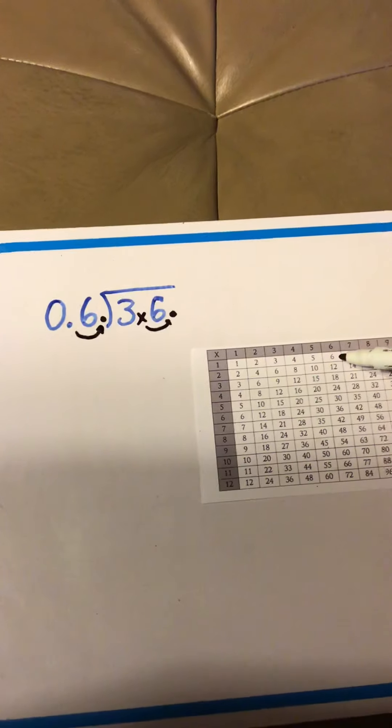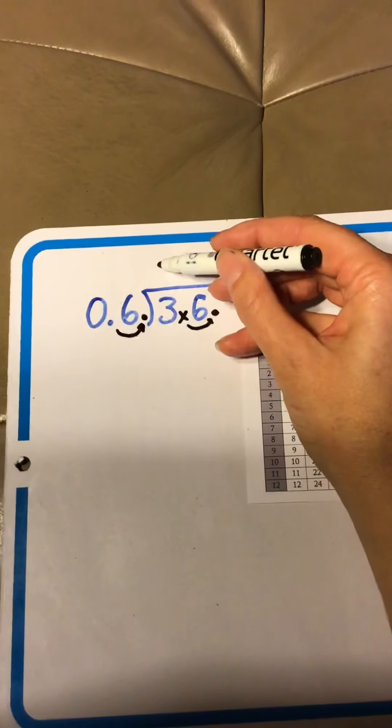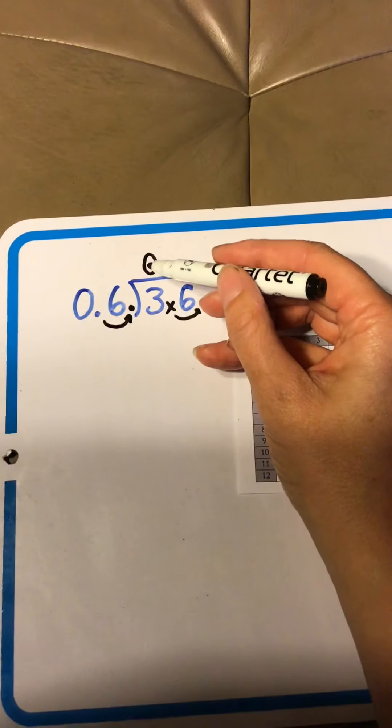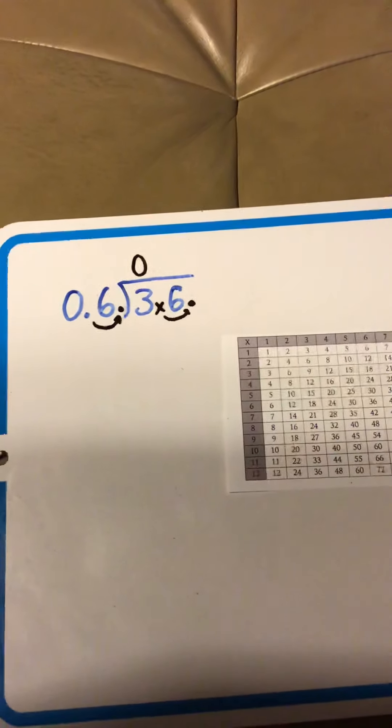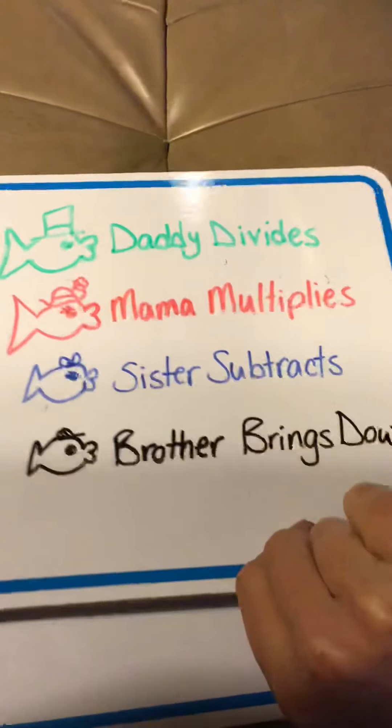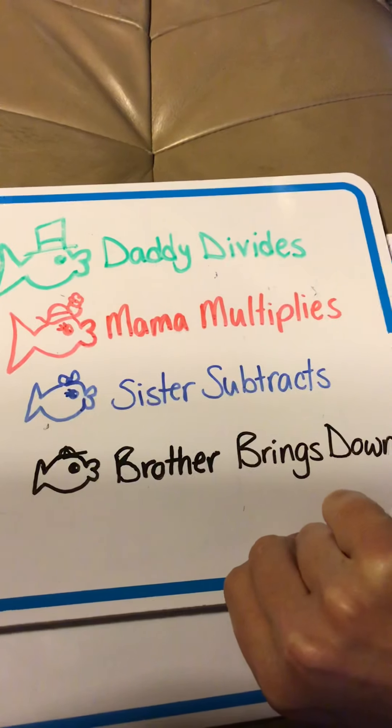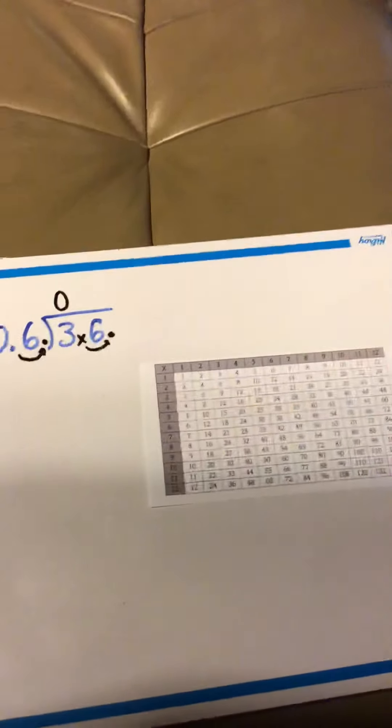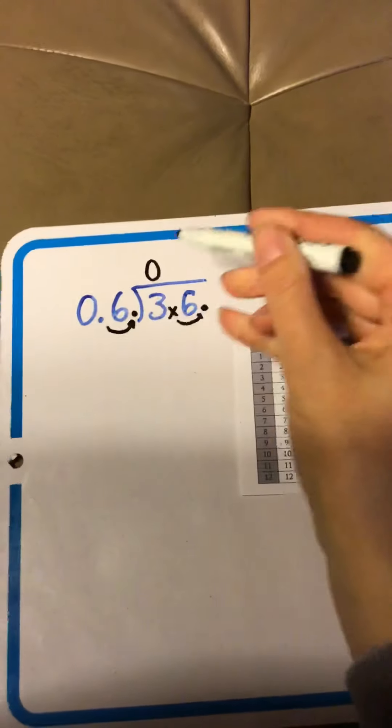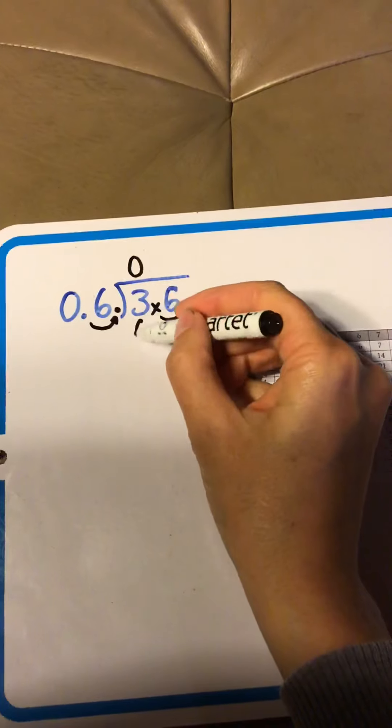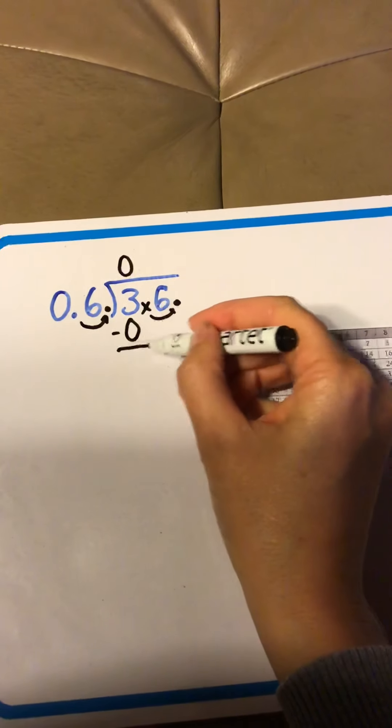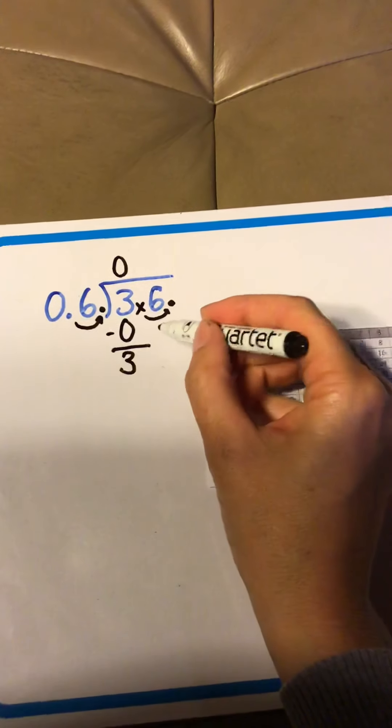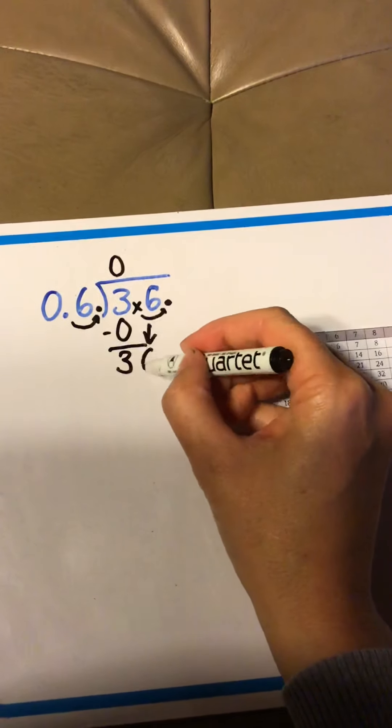Oh my goodness, it's not possible. Nobody gets any cookies. Ah, that's daddy-fish divide. Now, we've got to do mama-fish-says-multiply, because remember, daddy divides, mama multiplies, sister subtracts, and brother brings down. Okay, 0 times 6 is still 0. Now, shift into sister subtracts, 3 minus 0, still 3. Brother's going to bring down this happy little 6.